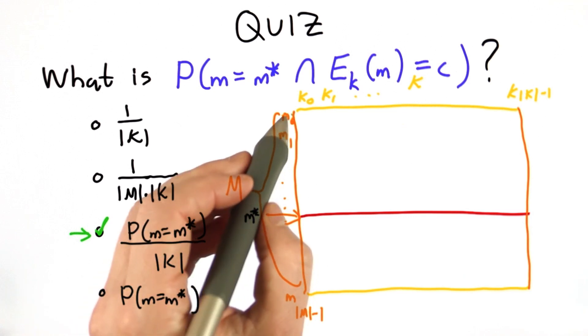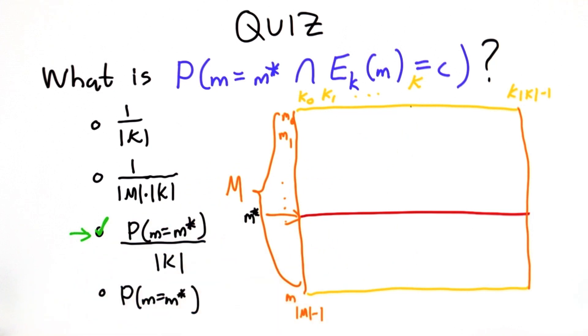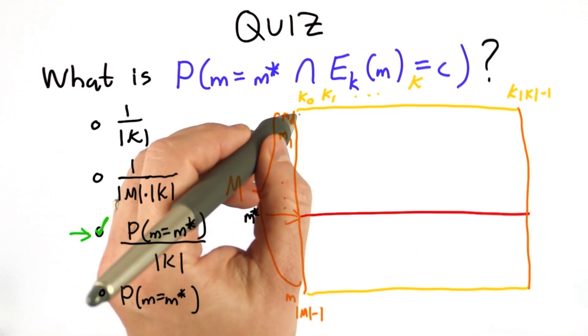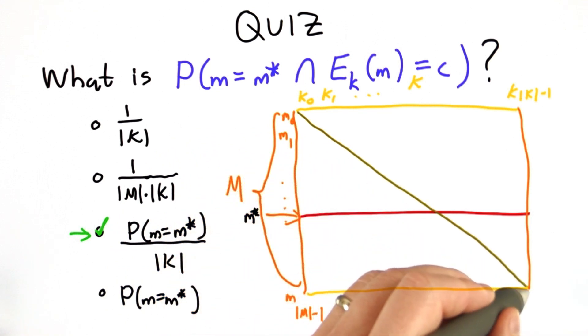Each one of these keys maps exactly one message to C. We saw that before, that there's one key that maps each message to C. So we can think of that as being a diagonal line through our probability space.